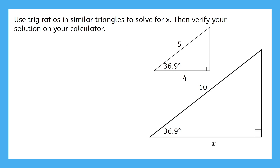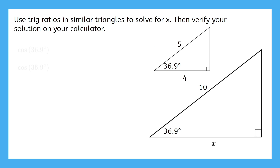Time for one more example. Use trig ratios and similar triangles to solve for x, then verify your solution on your calculator — basically, let's try this problem both ways and we'll see that our answers come out to the same thing. The first way is to set up trig ratios for each triangle and compare them. Pause the video now and try this out for yourself. We are using cosine this time since we have the adjacent side and the hypotenuse. For both triangles, the cosine of 36.9 degrees should simplify to be the same ratio. For the first triangle, we get 4 over 5. For the second triangle, we get x over 10, which should simplify to equal 4 over 5. This means x should be 8. You can even see that the sides of the second triangle are twice as long.